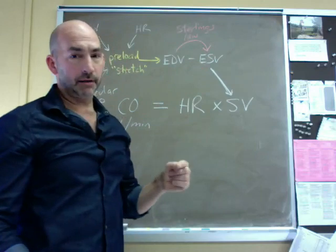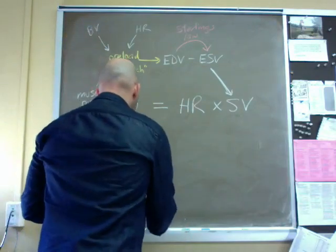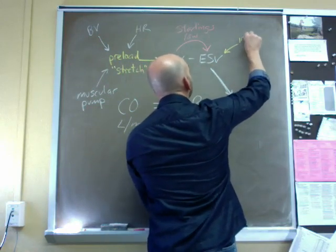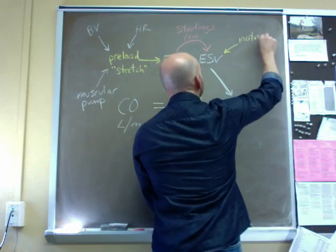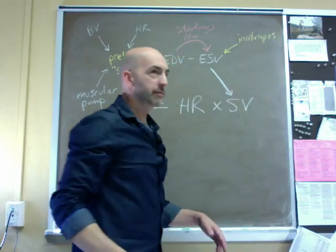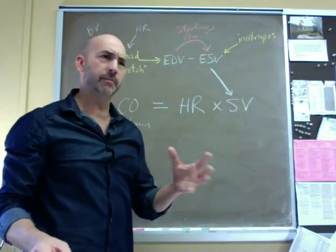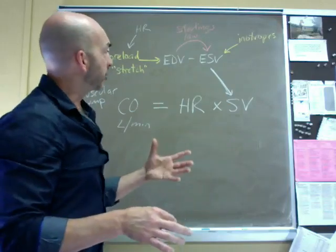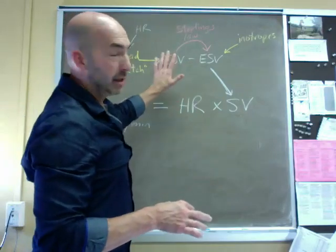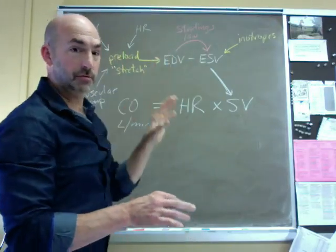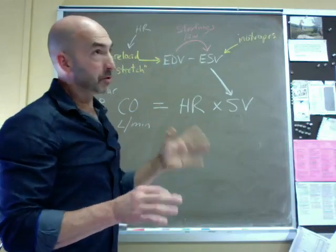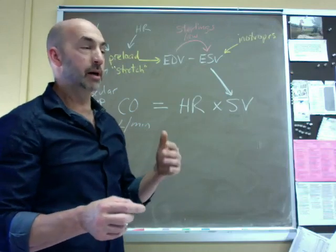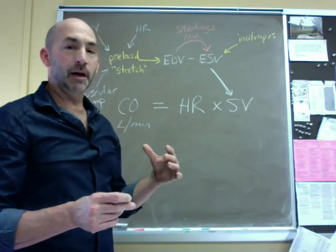We can affect stroke volume directly. And the agents that affect stroke volume directly are called inotropes. And there are positive and negative inotropes. Most things tend to be, majority of them, factors here are positive inotropes. And inotropes affect contractility at a given preload. In other words, the stretch thing is separate.